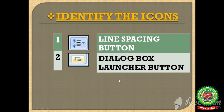Now we will do the identification of the icons. The first one is the line spacing button — because we are giving vertical space and the two arrows signify that this is the line spacing button. The second is the dialog box launcher button.